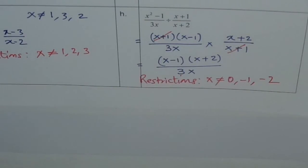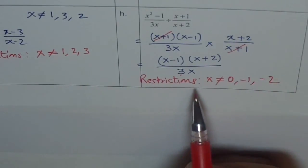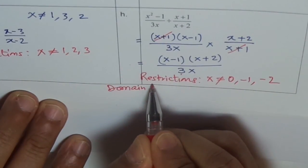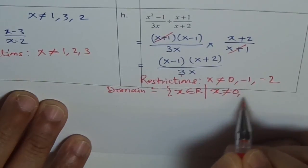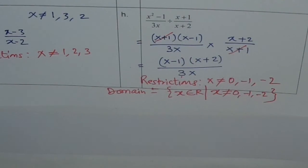It is a good practice to write restrictions first in the case of rational functions. Rational functions are a ratio of two polynomials where the denominator can never be zero — that leads to restrictions. The whole function is valid for every input in the domain of real numbers except for these restrictions. So the domain of this function can be written as: x belongs to real numbers where x is not equal to 0, −1, or −2.